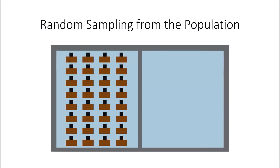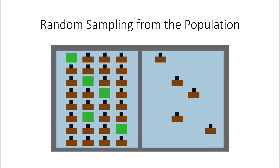This is our classroom with students seated at their desks, and we're going to be sampling from this classroom. We're randomly sampling — there we have our first random sample, then our second, third, fourth, and fifth. So we've sampled five students from this classroom. This is just an example for illustrative purposes — we're sampling from the population, and there are n individuals in the sample.